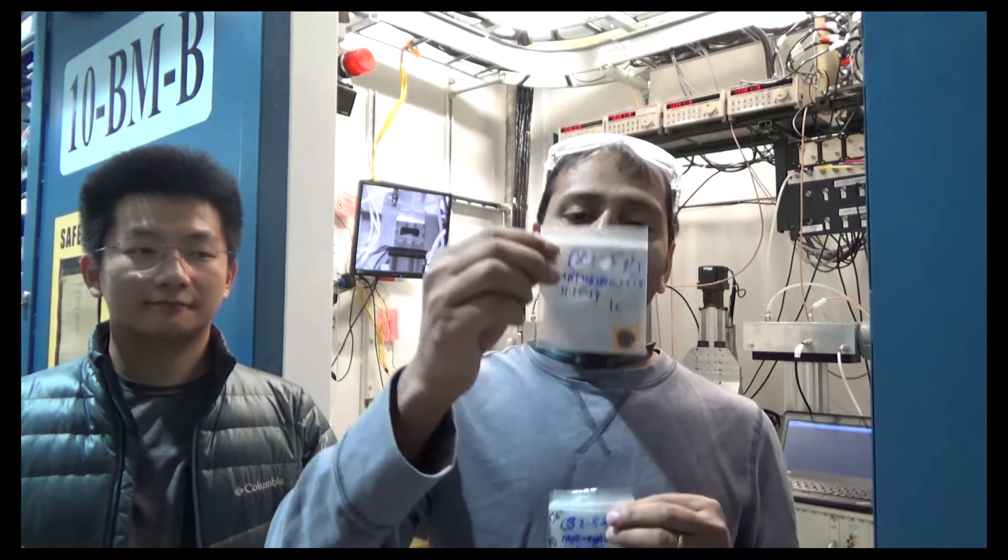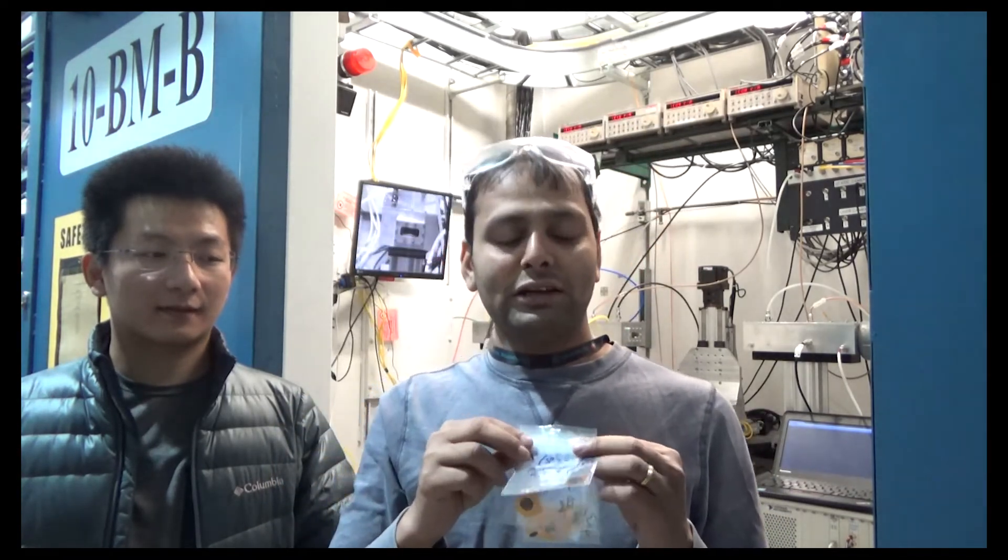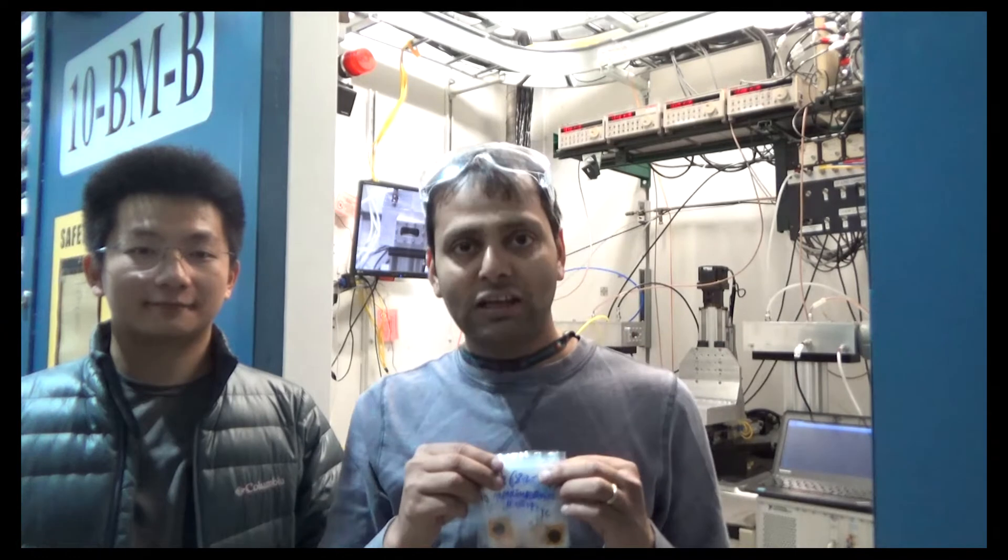Now we are inside the APS Sector 10 Bending Magnet Line to perform XAS x-ray absorption experiments of our battery material in different charge and discharge steps. These are the battery materials extracted from our lithium-ion battery coin cells to study the structural change and electronic stress during electrochemical cycling.